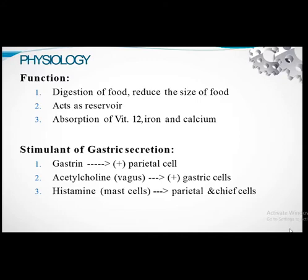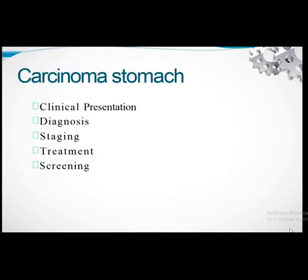Physiologically, the stomach digests food, reduces the size of food particles, and acts as a reservoir. The absorption of vitamin B12, iron, and calcium occurs in the stomach. Stimulants of gastric secretion include gastrin secreted by parietal cells, acetylcholine released by the vagus nerve which stimulates gastric cells, and histamine from mast cells which also acts on the parietal and chief cells.